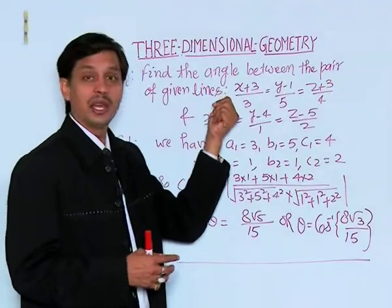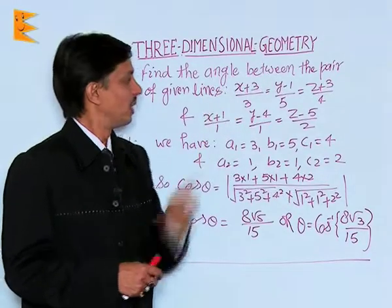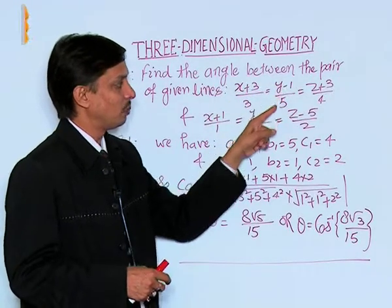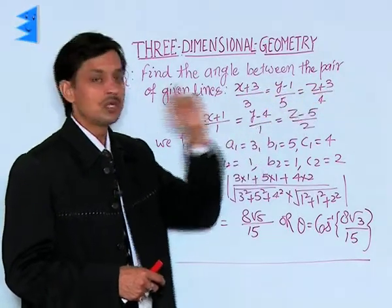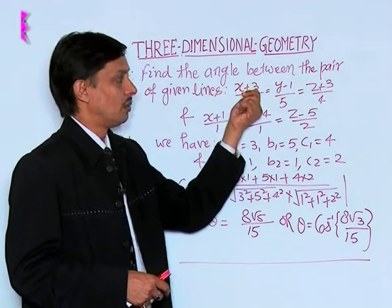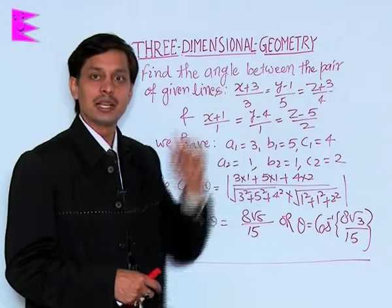Here, if I compare it with the Cartesian form (x-x1)/a, (y-y1)/b, (z-z1)/c, I notice x1, y1, z1 are -3, +1, and -3.